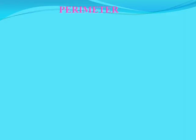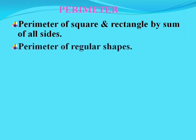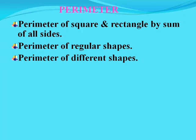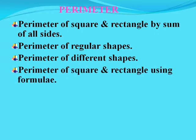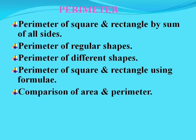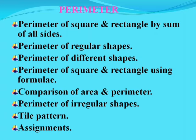So in this topic, we are going to discuss: perimeter of square and rectangle by sum of all sides, perimeter of irregular shapes, perimeter of different shapes, perimeter of square and rectangle using formulae, comparison of area and perimeter, perimeter of irregular shapes, tile patterns, and assignments. So children, let's move forward.